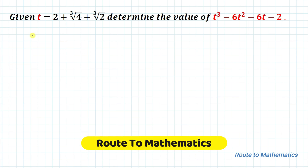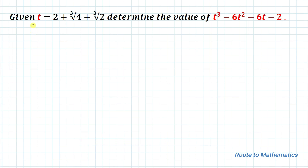Hello everyone, welcome to Root 2 Mathematics. In this video we are going to solve an interesting question. The given question is: t equals 2 plus cube root of 4 plus cube root of 2, then determine the value of t cubed minus 6t squared minus 6t minus 2. We have given the value of t and are asked to find the value of the given expression. Without any delay, let's start the solution.